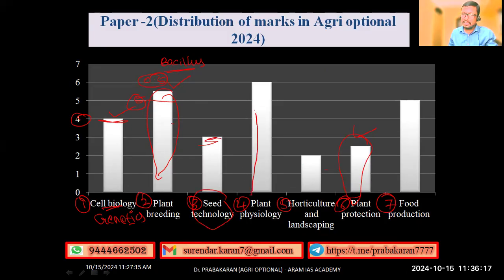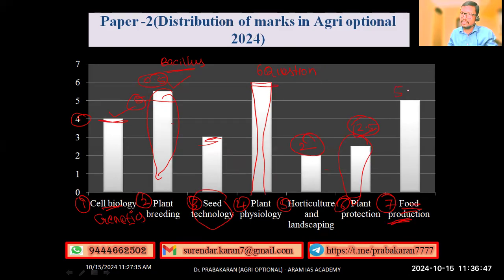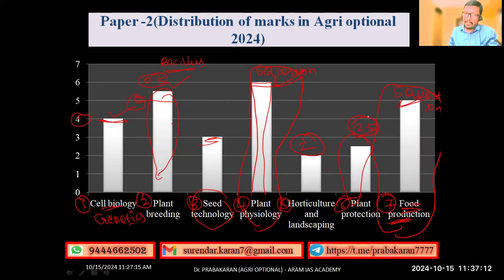Plant physiology was given the highest importance in Paper 2 — six questions were asked from plant physiology. From horticulture and landscaping only two questions were asked, and from plant production around 2.5 questions. From food production, nearly five questions were asked. Interestingly, plant physiology, one of the toughest parts, and food production, a simpler topic coverable in about four days, had almost equal numbers of questions — six and five respectively.